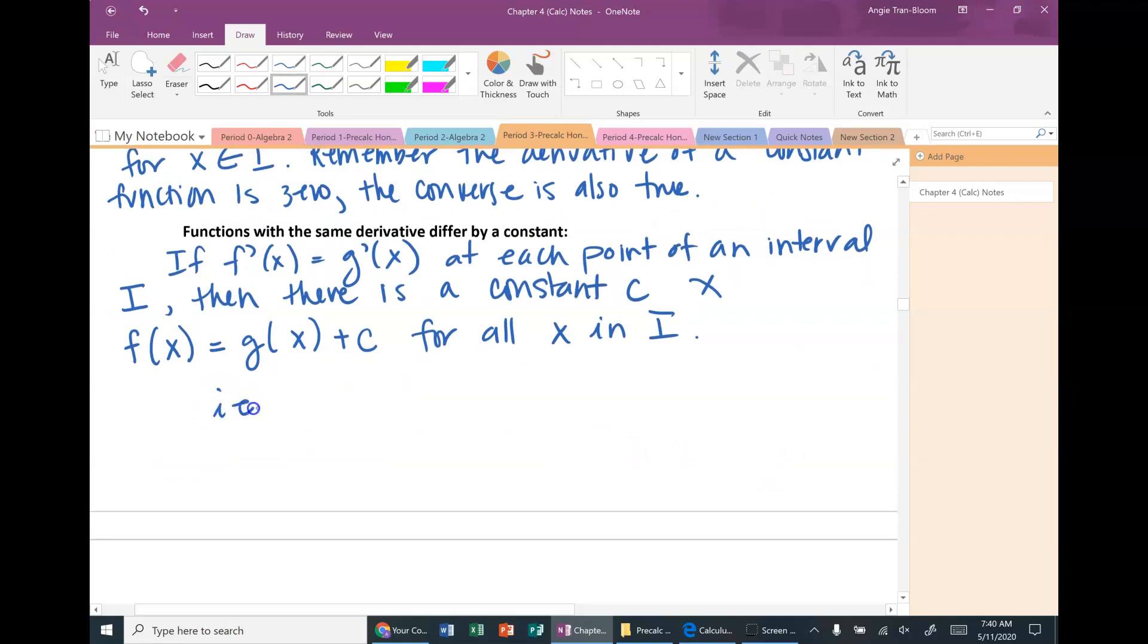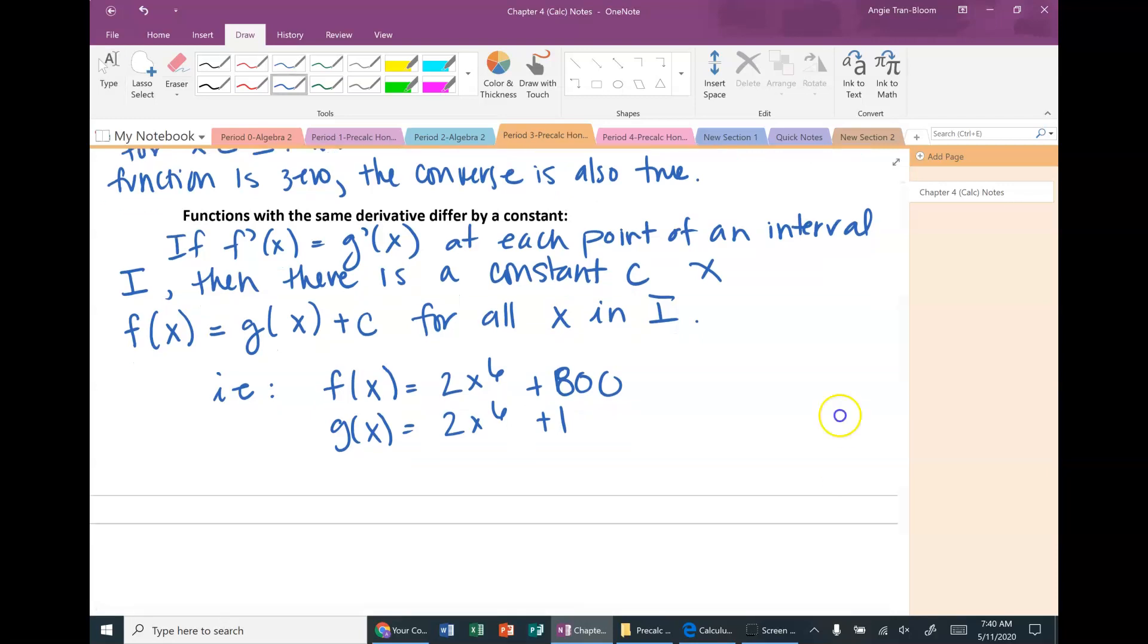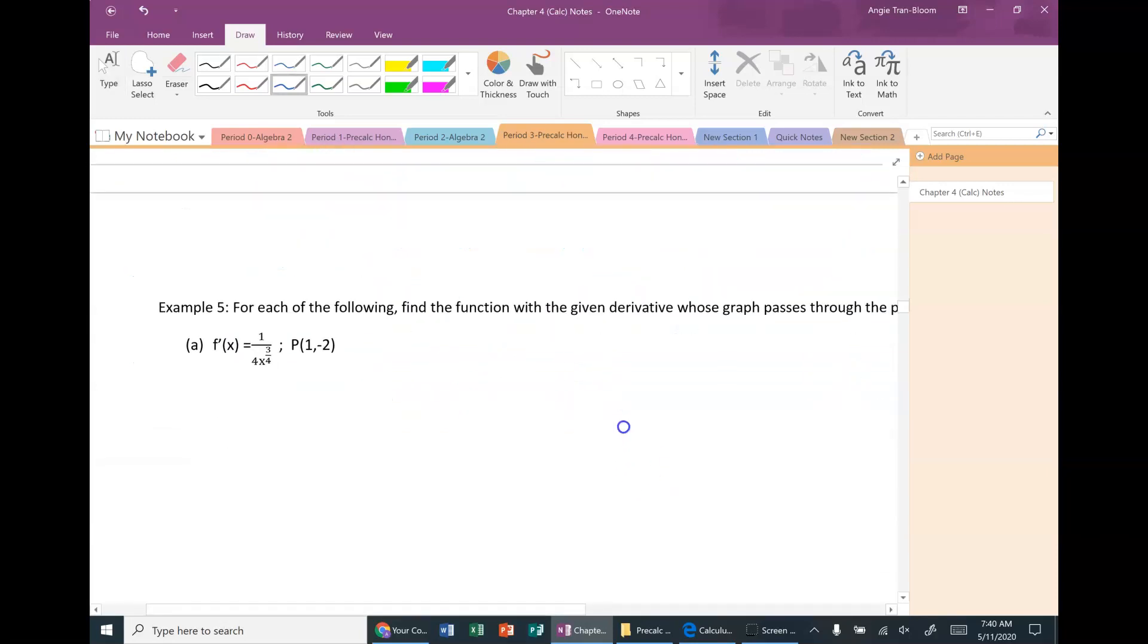So an example of that would be f of x equals x to the 6 plus 800, and g of x equals x to the 6 plus 1. The derivative f prime of x and g prime of x are exactly the same, and the only difference is their constant c. Let's move on to our example 5.